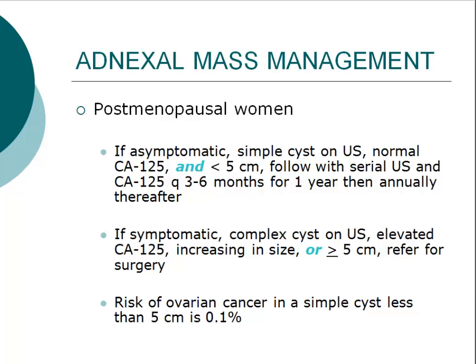In a postmenopausal woman, the chance that an adnexal mass is cancer is higher. Consequently, the patient must meet all of the following criteria to allow for expectant management instead of surgery: the patient is asymptomatic, the cyst is simple and less than 5 cm, and the CA-125 level is normal. If the patient has symptoms, if the cyst is complex, greater than 5 cm, or increasing in size, or if the CA-125 is elevated, refer the patient for surgery.